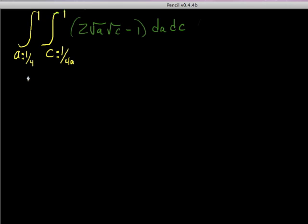Let me write this as two double integrals: a goes from 1/4 to 1, c goes from 1/(4a) to 1, so 2√a√c, and then dc da. When dc is the first term here, it's implied that you're taking the integral with respect to c first.